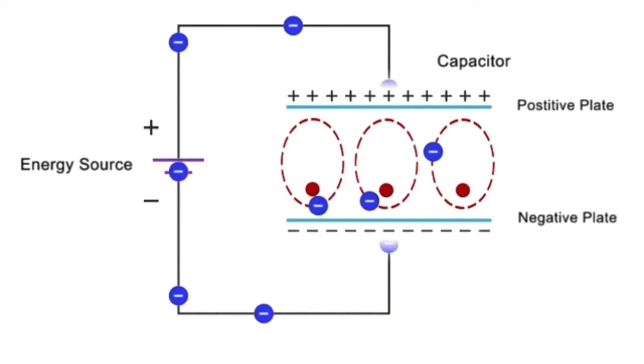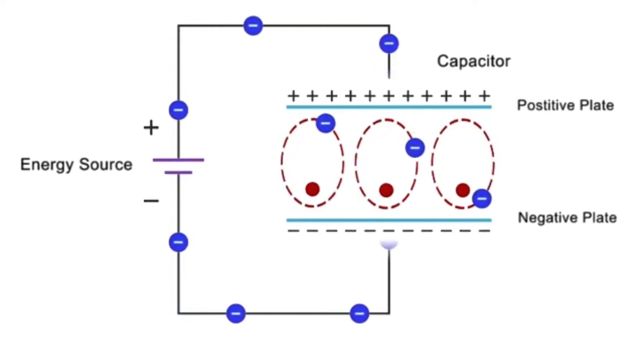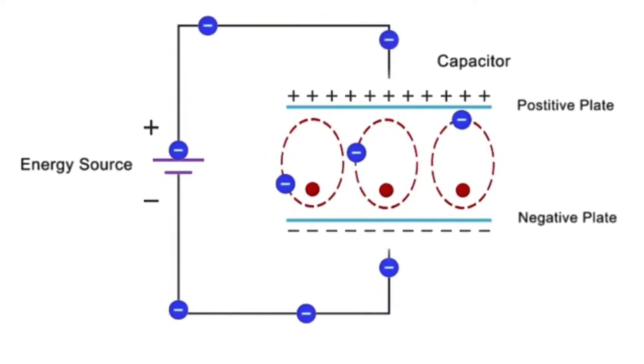This process of distorting the orbit of the electrons uses energy that then becomes stored in the dielectric material.